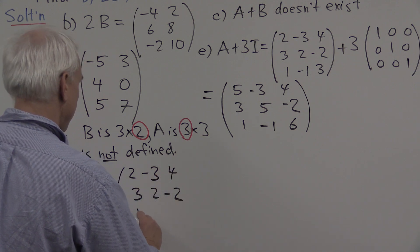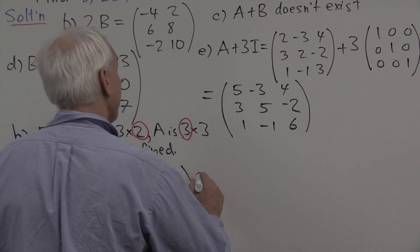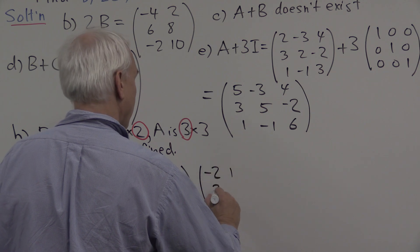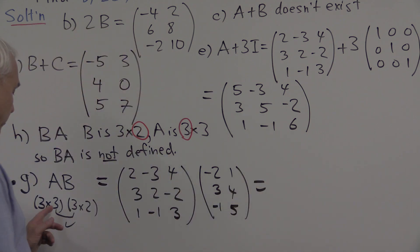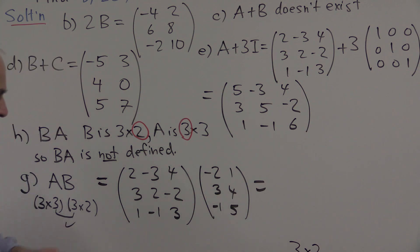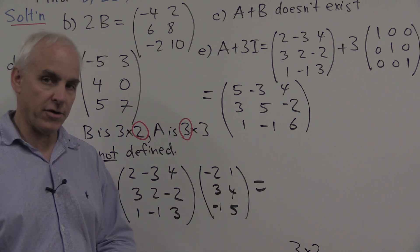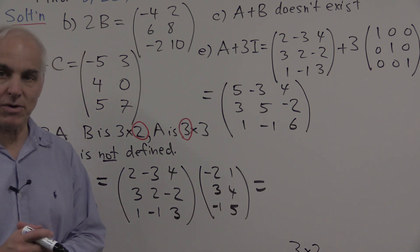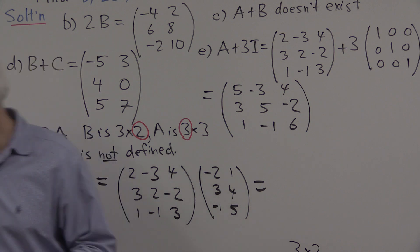So here is the matrix A, and here is the matrix B. And this is a 3 by 3 times a 3 by 2. The inside dimensions here equal, so the result should be a 3 by 2. What we're ending up here should be a 3 by 2. And it's 3 because there's 3 rows here, and it's 2 because there are 2 columns here.